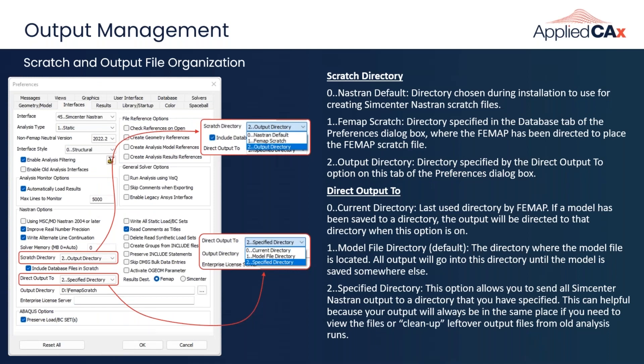Getting started on output management with scratch and output file organization. We'll open FEMAP's preferences and navigate to the Interface tab to see where SimCenter NASTRAN solver output is being directed. As NASTRAN runs it generates temporary files. Our preference is to direct those files to a user-specified scratch directory located on a local drive — not a network drive — to optimize performance. You should select your fastest drive, the one with the highest read and write speed, since the solver will be reading and writing to this location while running.